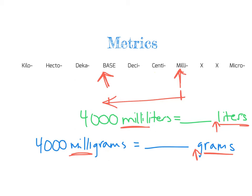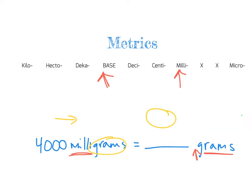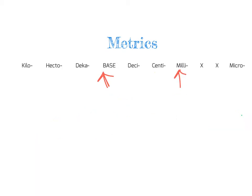The prefixes are what we're focusing on. The difference between these questions is only the base — liters means we're talking about liquid, grams means we're measuring weight. It's still a milli-to-base conversion regardless, so it's still three places to the left. This is going to come in handy when we get into dosage calculations.